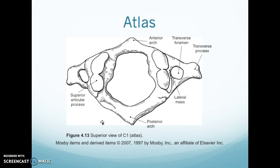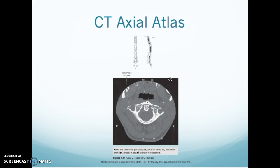This is C1, the atlas. You have your anterior arch with your posterior arch, your transverse process with your transverse foramen within it, your superior articular process up top, and your lateral mass between the transverse foramen and the superior articular process. On CT you can see your anterior and posterior arch, and then the lateral mass is larger here with your transverse process and foramen.